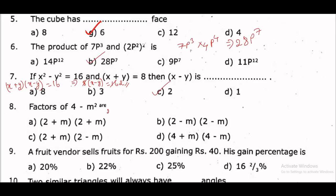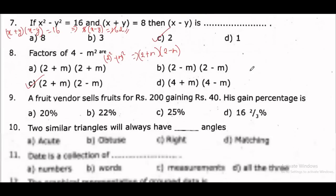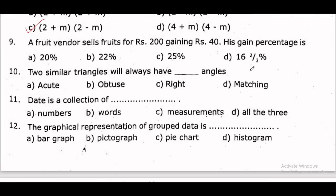This is 2 squared minus m squared, so this is x squared minus y squared form. This factors as (2 + m) into (2 − m). So the answer is (2 + m)(2 − m). Option C.